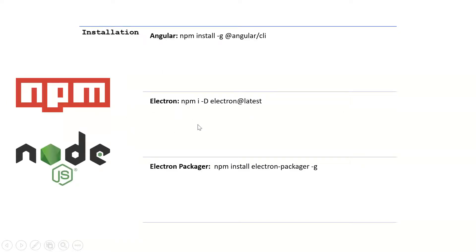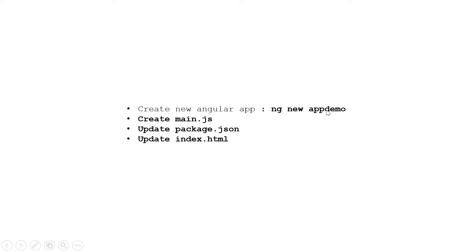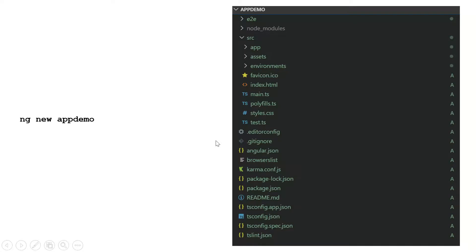Let me explain the theory and then we'll go with the practical approach. These are the things you need to do to integrate Electron with Angular: first, create a single Angular app using Angular CLI; then create a main.js entry point for the ElectronJS app; then modify package.json to be compatible with Electron; and finally update index.html a little.